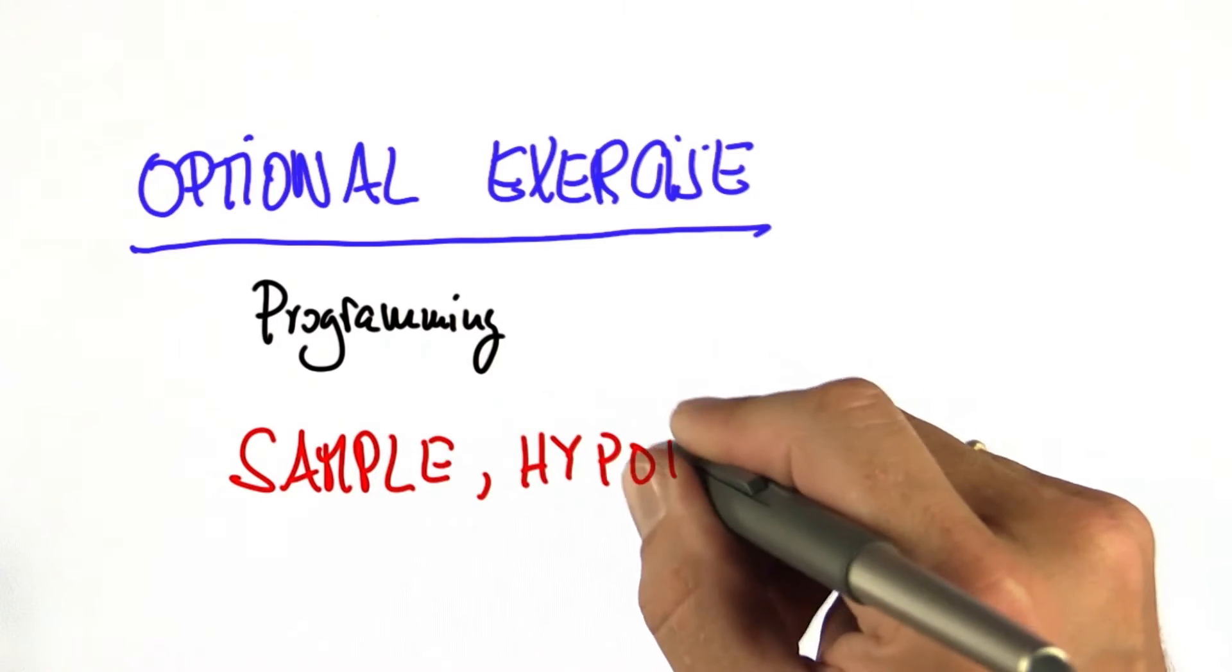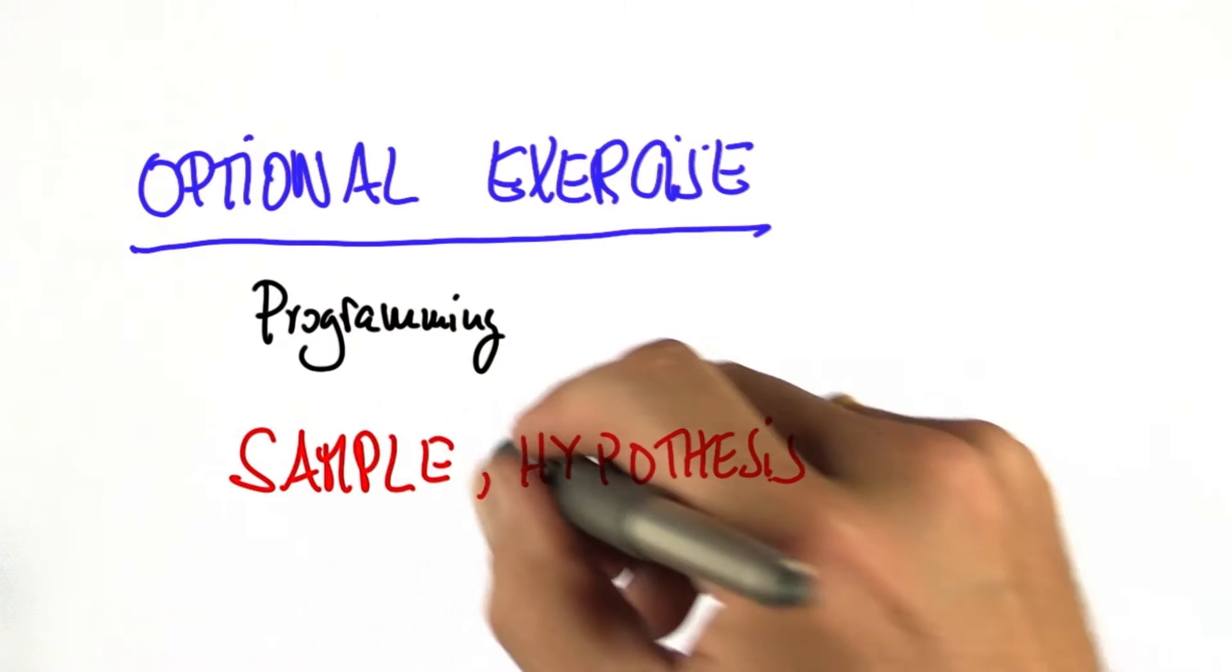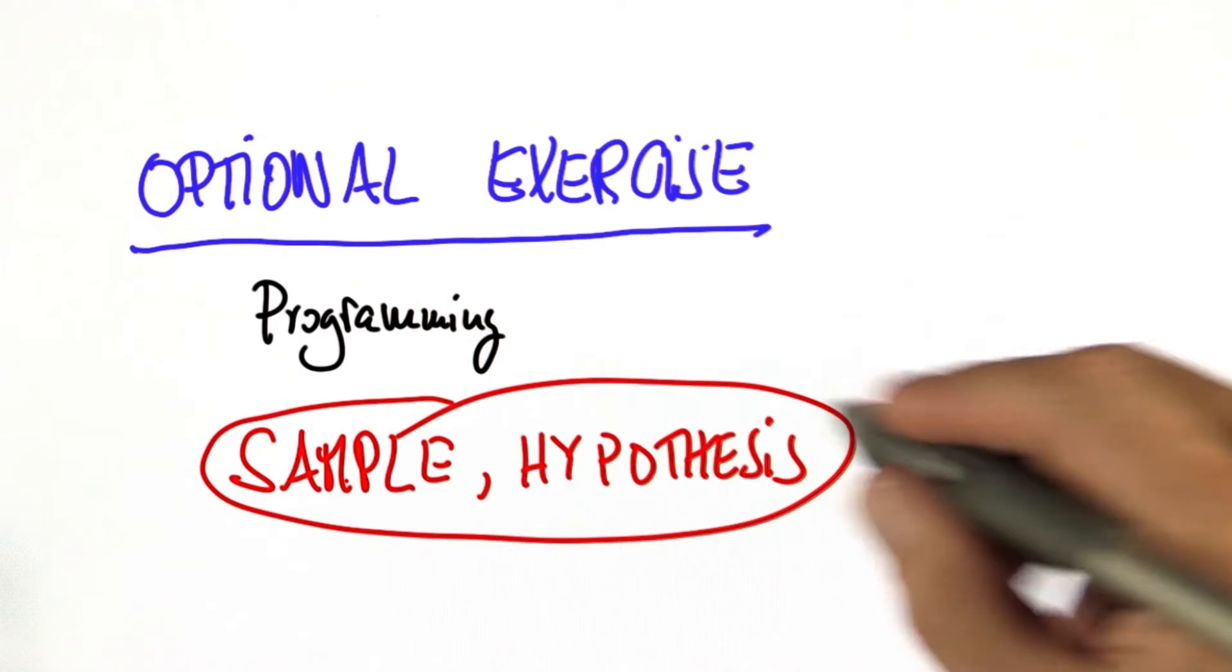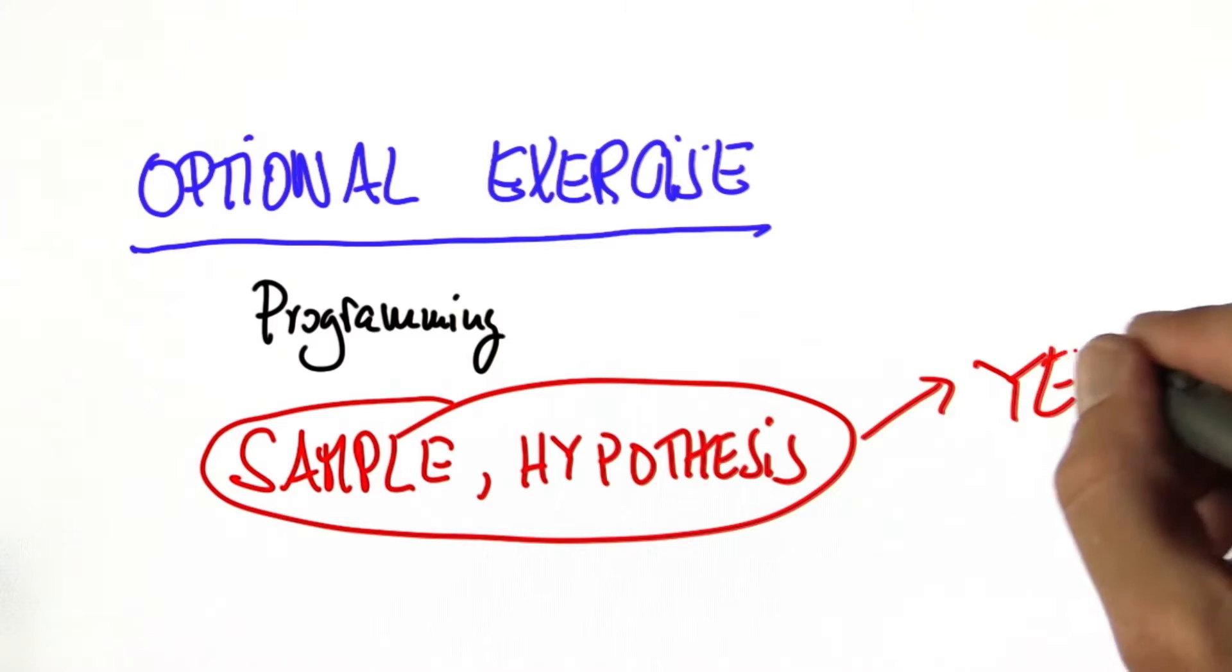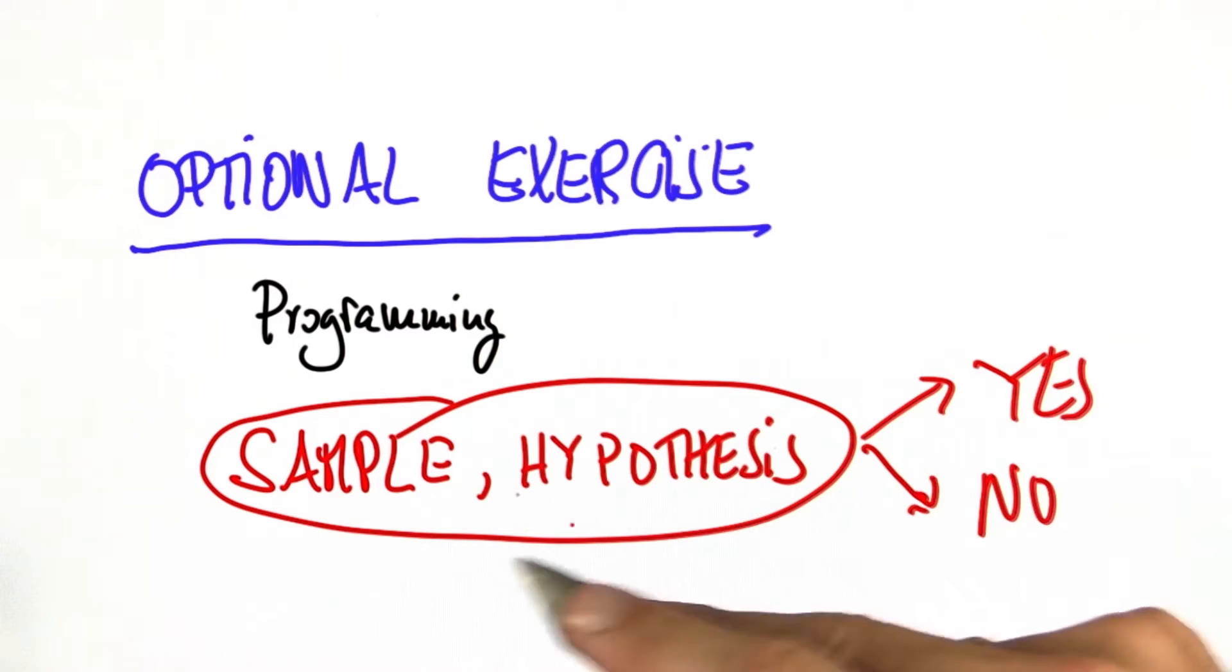So here's our optional unit. It involves programming. And what I want is really simple. I want to input a sample and a hypothesis, and out should come a simple yes or no, whether it should accept it.